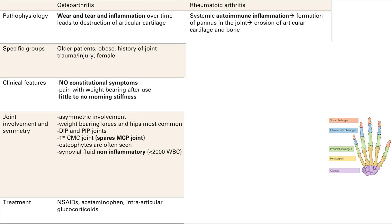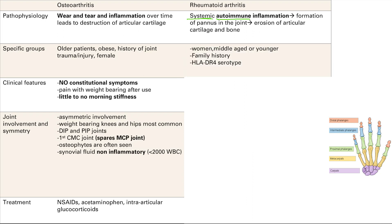Now moving on to rheumatoid arthritis, comparing and contrasting to make things easier. Pathophysiology is very important here. This is a systemic autoimmune inflammation — systemic meaning many parts of the body are affected, and autoimmune meaning you'll have autoantibodies. The inflammation causes formation of a pannus, which is inflammatory granulation tissue in the joint, leading to erosion of articular cartilage and bone — a similar endpoint to osteoarthritis. Those at risk are typically women, middle-aged or younger, with family histories. People with HLA-DR4 serotype are at increased risk of rheumatoid arthritis.